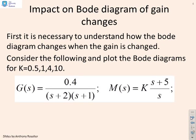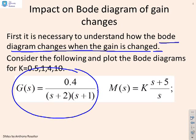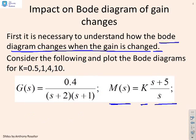Let's start with an example then. Let's look at what happens to our Bode diagram when we change the gain. So we've got a simple system here, g. You can see it, 0.4 over S plus 2, S plus 1. We've got a compensator M of S, which we're writing as K into S plus 5 over S. And what we're going to do is we're going to look at different values of K and ask ourselves, how did the Bode diagrams change and what can we read from this?